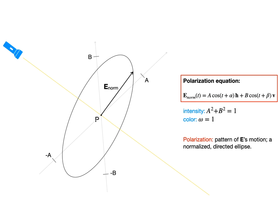That's why we can represent polarization with a normalized, directed ellipse, whose parametric equation has both intensity and angular frequency set to 1, to indicate that they do not matter. And, as you can see, omega even drops out of this normalized formula.